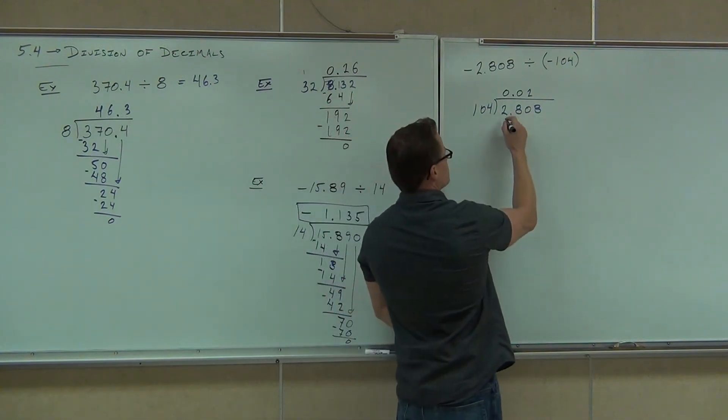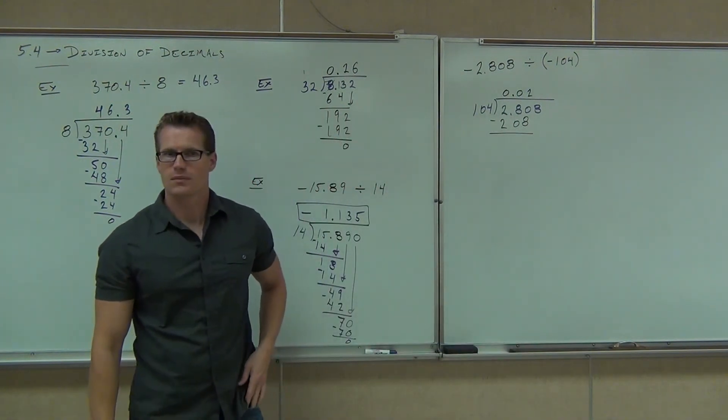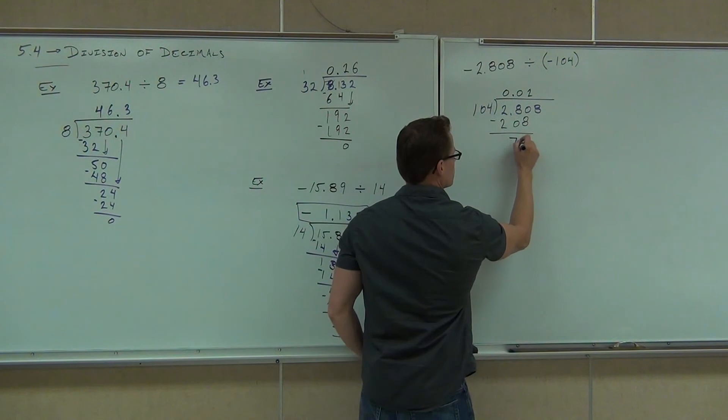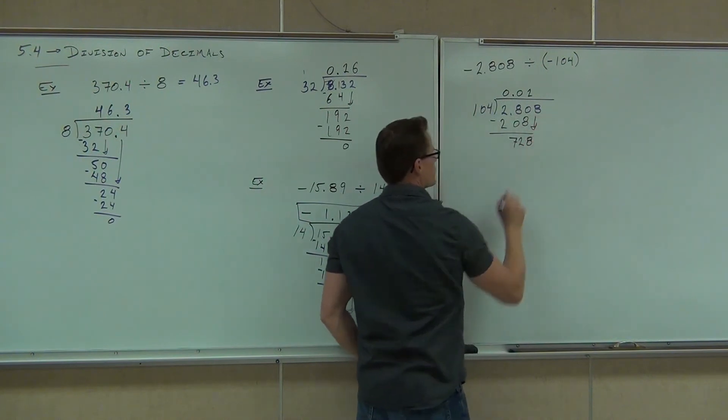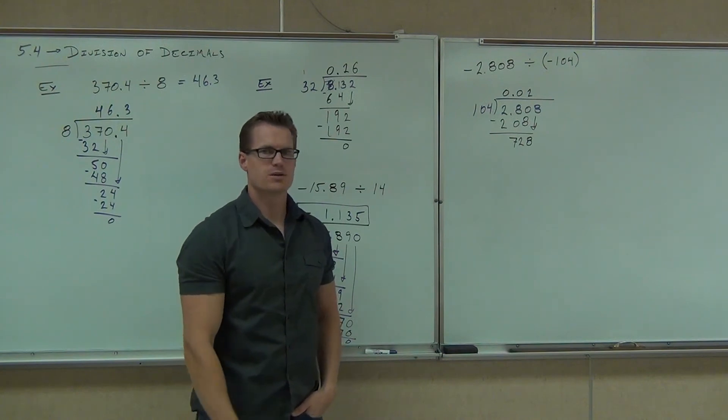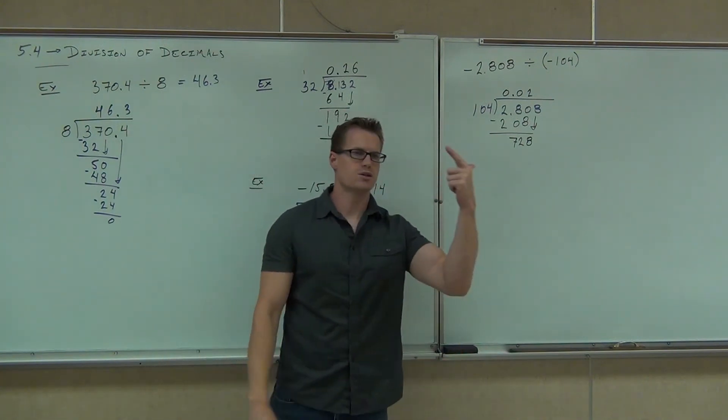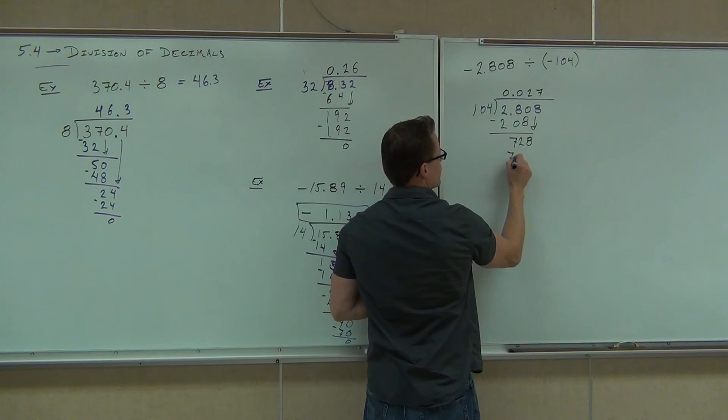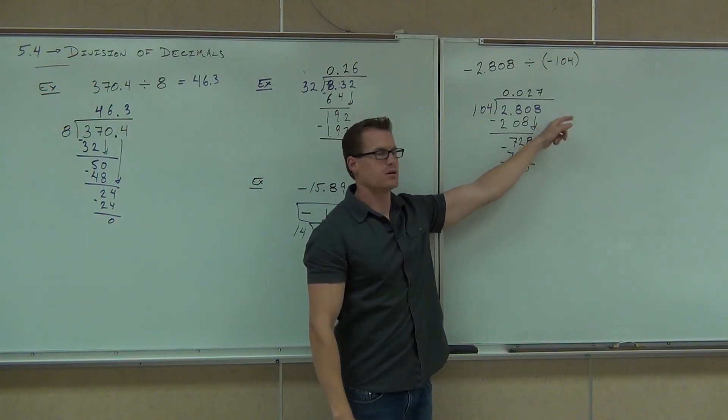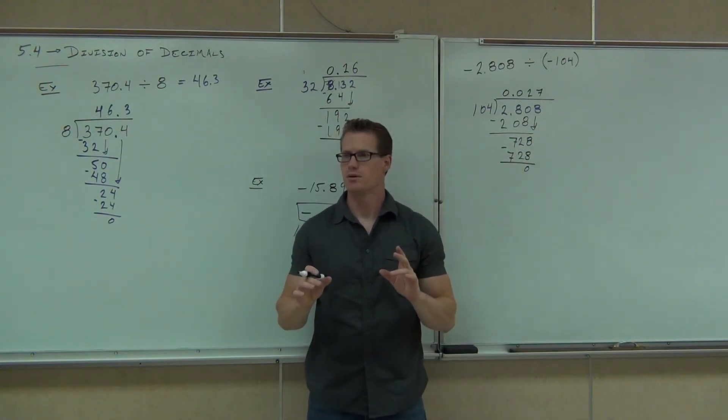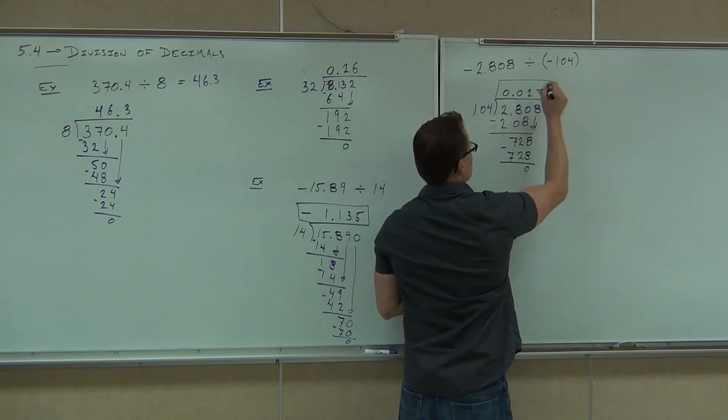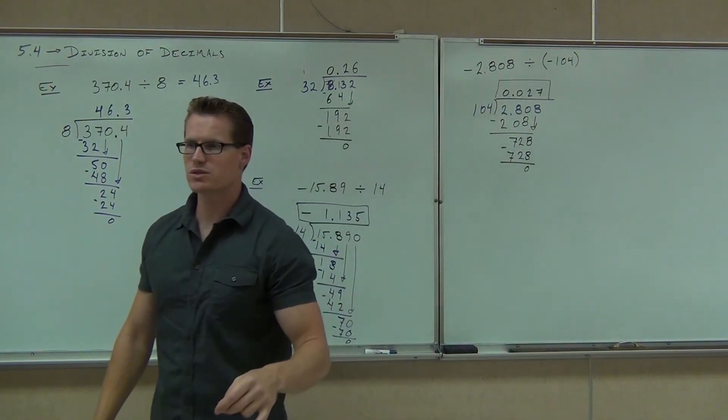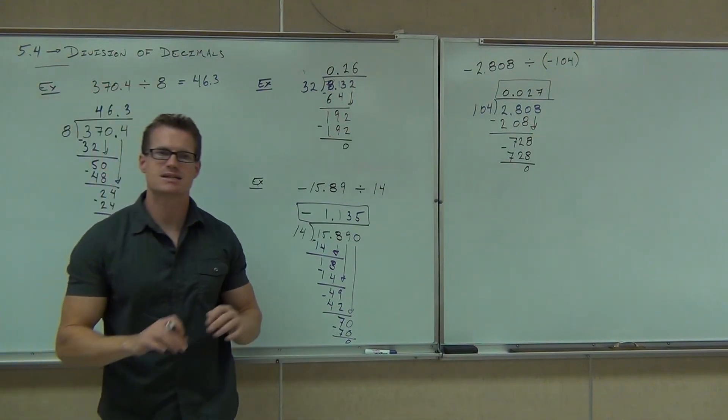Continue to multiply. We're going to get 208. 72. We do bring down the eight. And we check 104 into 728. I'm guessing it probably goes in seven times. Yeah. So I'm guessing because I'm estimating with 100. Go one, two, three, four, five, six, 700, probably seven times. When we multiply, you get 728. We subtract. We get zero. Do I need to add a zero on the end of this number? No, so this is it. Do we have a positive or a negative? Positive. Because we've already calculated that sign, 0.027. Not 0.27, 0.027. That's 10 times different right there.